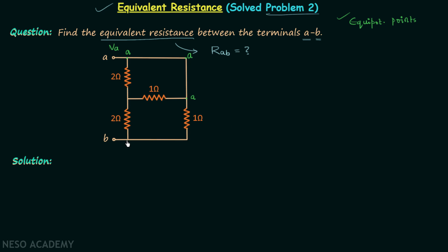Similarly, this is point B. This is point B as well, and let's say this is point C. Once we are done marking the equipotential points, we reconstruct our network from scratch. We simply place each point once: this is point A, this is point B, and this is point C.